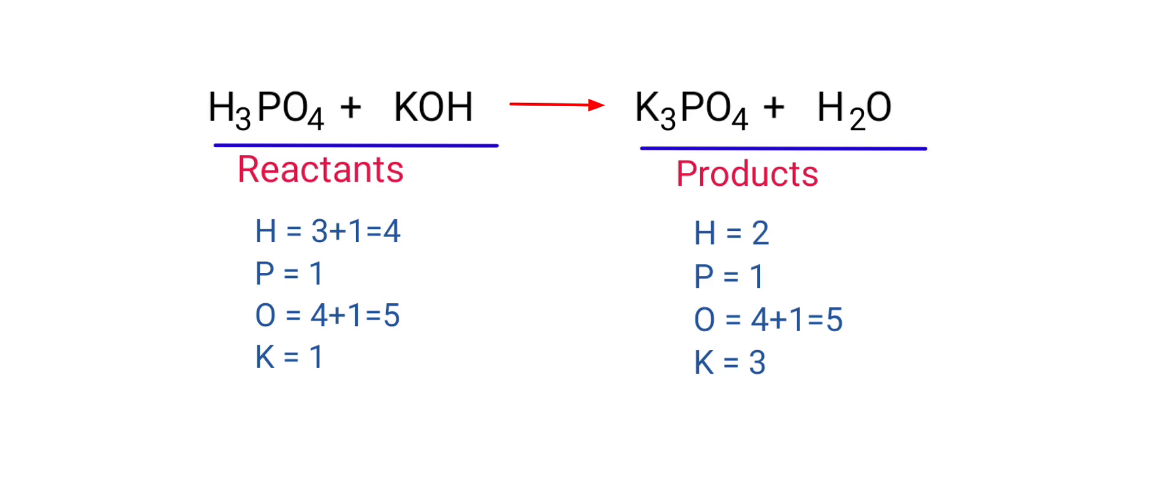The number of atoms are not balanced on both sides. To balance the chemical equation, we need to make use of coefficients. A coefficient is a number that we place in front of a chemical formula.